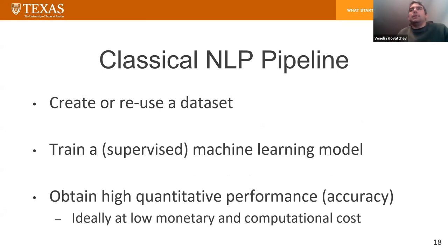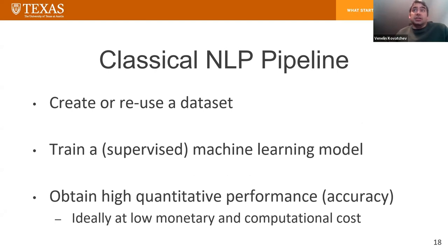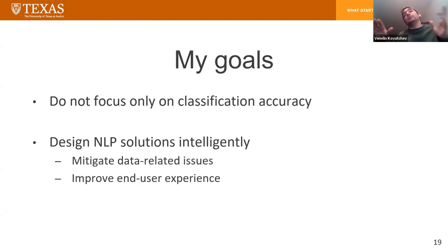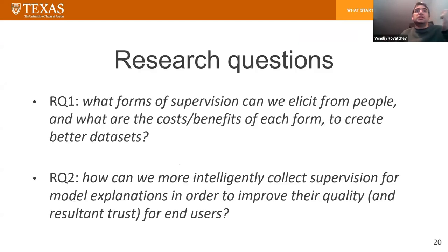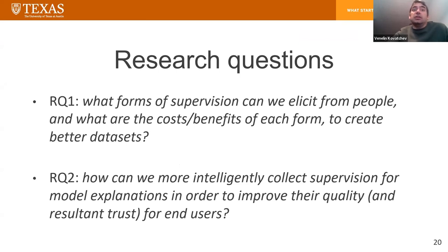The classical NLP pipeline involves creating or reusing a dataset, training a supervised machine learning model, and obtaining high-quality performance in terms of accuracy, F1, or other quantitative scores — ideally at low monetary and computational cost. However, our goals are slightly different. I don't want to focus only on classification accuracy. I instead want to design NLP solutions intelligently in a way that mitigates data-related issues and improves the end-user experience. Our two research questions are: what forms of supervision can we elicit from people, and what are the cost-benefits of each form to create better datasets for automatic fact-checking? And second, how can we more intelligently collect supervision for model explanations in order to improve the quality of those explanations and the trust of users?